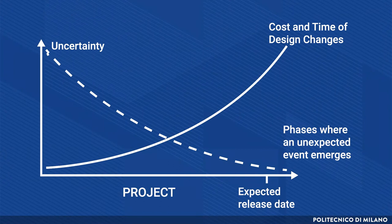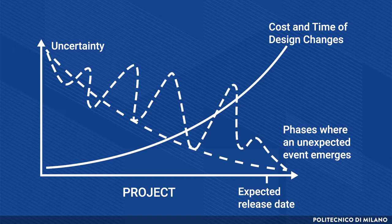In these sectors, the uncertainty curve does not decrease monotonously during the project, but has continuous upward peaks. For example, we have to understand if the feature launched by the competitor that we do not have is relevant to the market. If so, we have to modify the project, even in later stages.